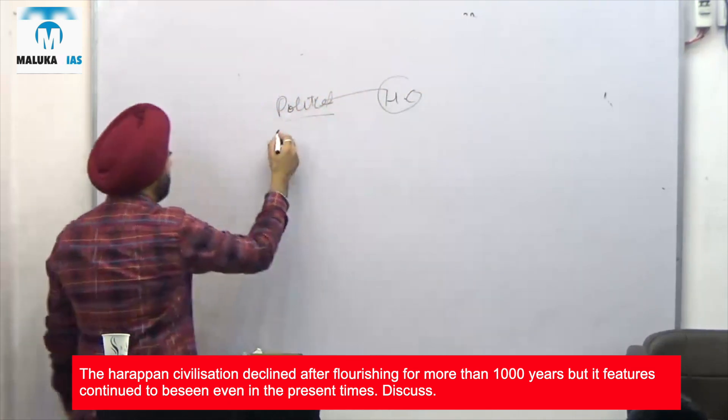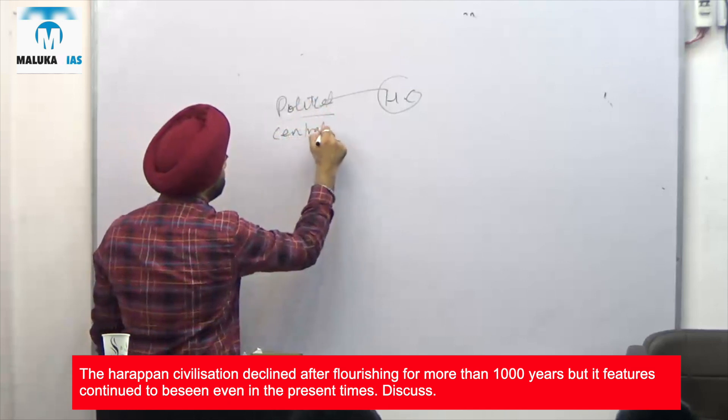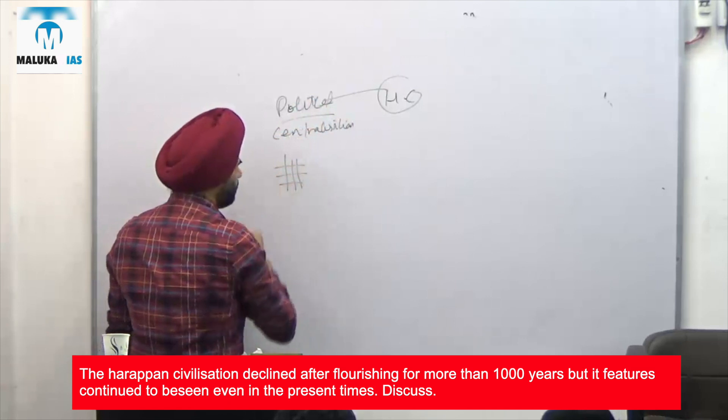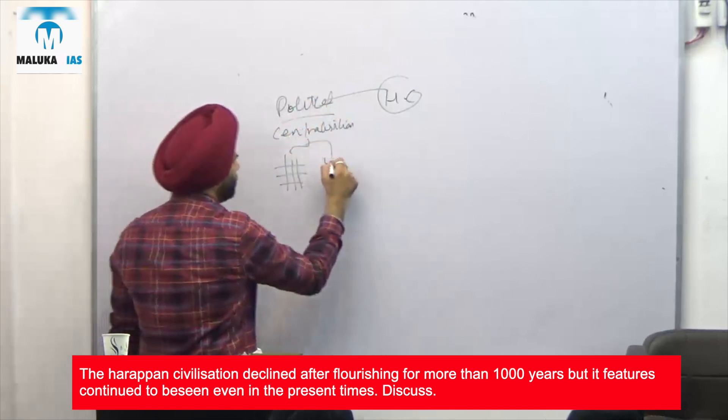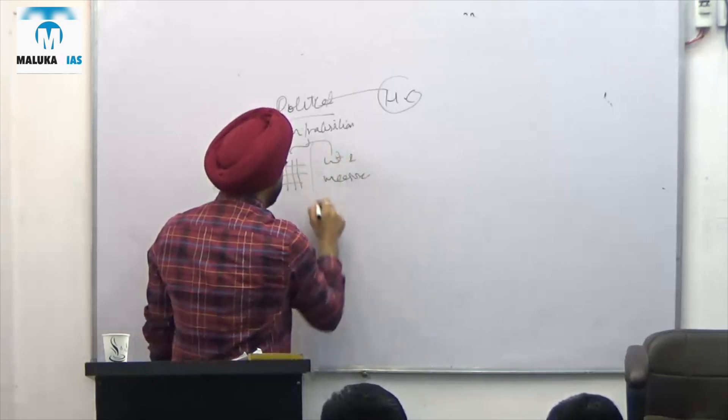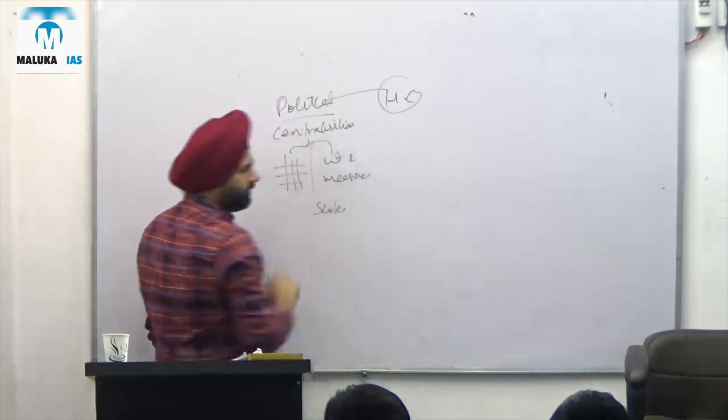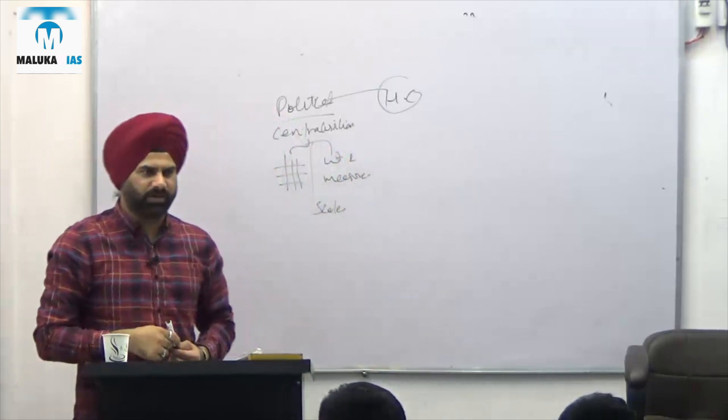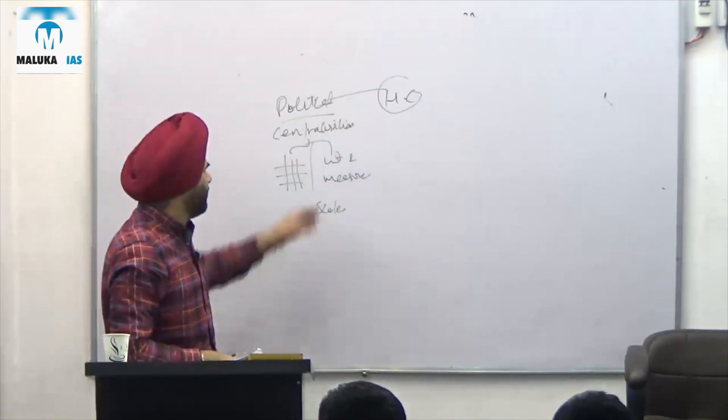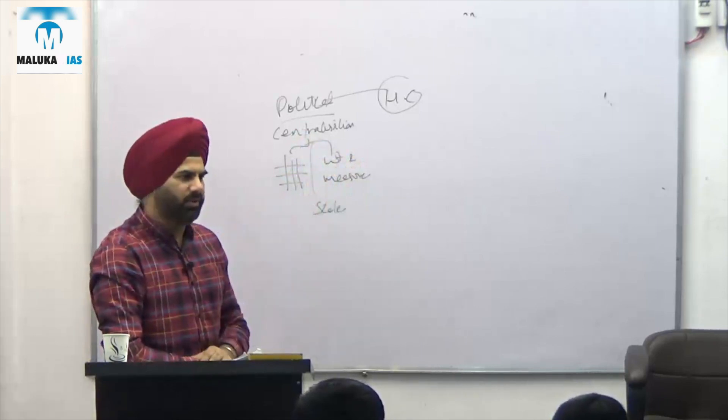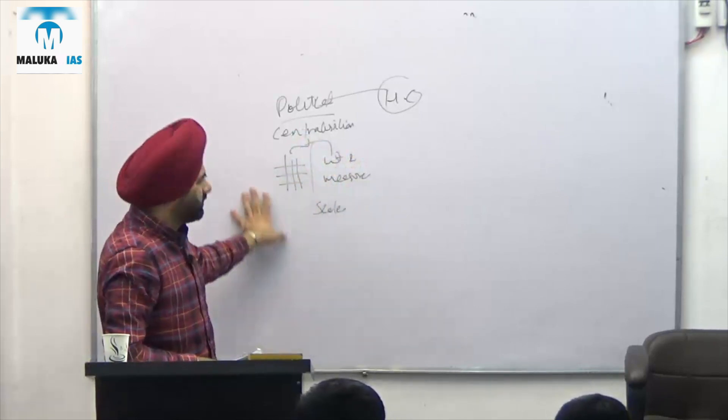Politically, the amount of centralization that is there can be seen from the grid pattern of the roads, from the weights and measures, from the scales and other things. The same amount of this centralization can be seen by various departments at the central and the state level. The same centralization efforts continue today - our currency is unified, our weights and measures, everything is same.